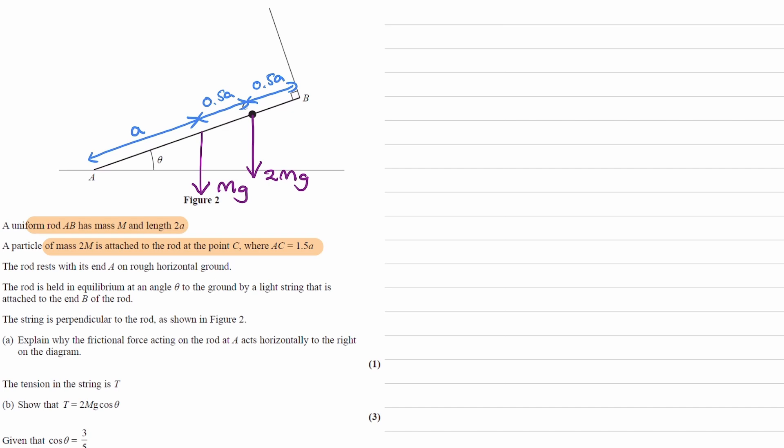We're told that the rod rests with its end A on rough horizontal ground, so we will have a friction force on the ground. The normal contact force goes upwards, I'll call that R. And we have the rod being held in place with a string that pulls on the rod at point B. So there would be a tension force here. We're told that the string is perpendicular to the rod.